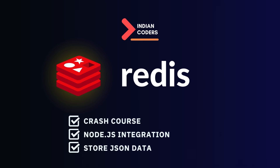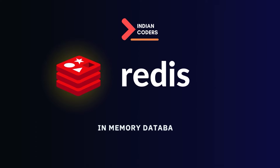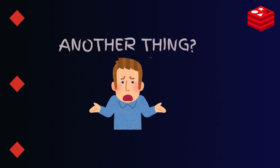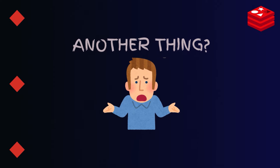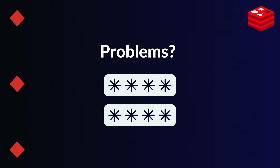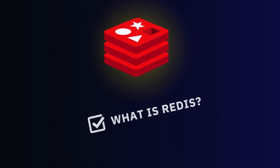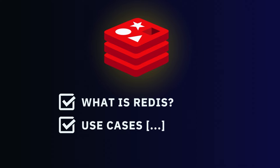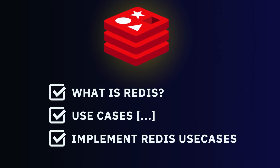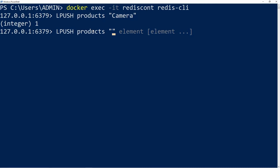In this course, you will learn about Redis. Redis is an in-memory database used for storing data in memory or for caching. First, we'll discuss why exactly we need Redis — the problem — and then I'll show you an example. Then we'll discuss what Redis is, its use cases, and then we'll implement practical Redis, including each use case using the Redis CLI.